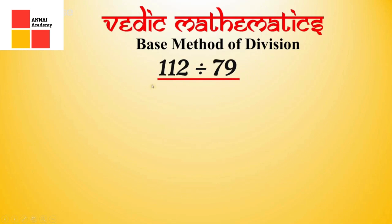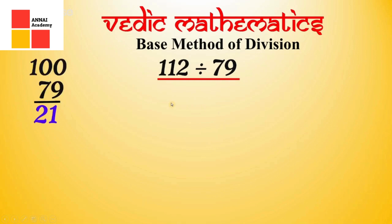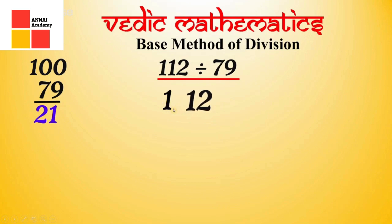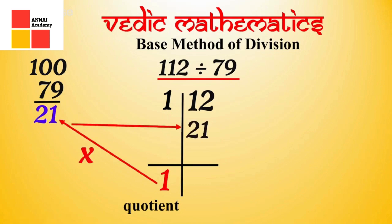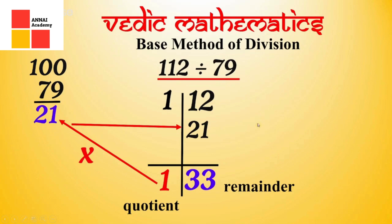Now we have to divide the 3-digit number 112 by 79. First, let's find the base of 79, which is 100. We subtract 79 from 100 to get 21. We have to divide 112 by 79, which is a 2-digit number, so leave 2 digits from the right-hand side of 112. Write the number in 2 parts. Multiply 1 by 21: 1 into 21 is 21. Write 21 below the other part. Now add 12 and 21: 12 plus 21 is 33, which is your remainder. So 1 is your quotient and 33 is your remainder. You saw how quickly and easily we got this answer according to Vedic maths.